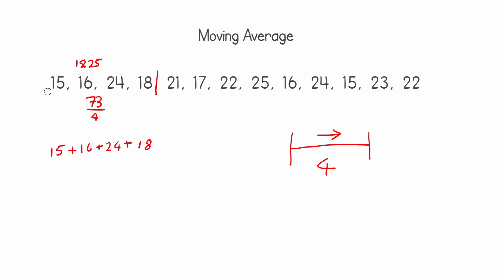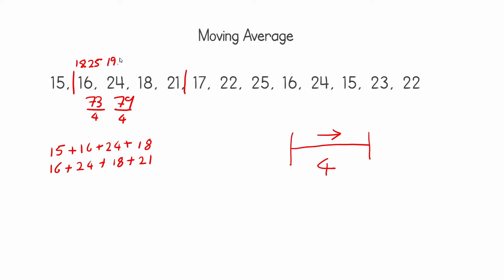Next, we move this window forward — we move the back one item forward and the front also one item forward. The window always has to be the same size; in this example it is four. We repeat the summation: 16 + 24 + 18 + 21, which gives us 79. Again we divide by four, and now we have 19.75. We continue in this fashion.